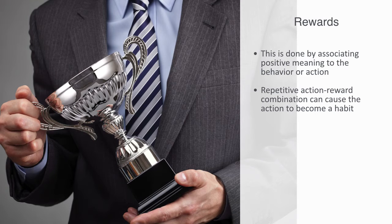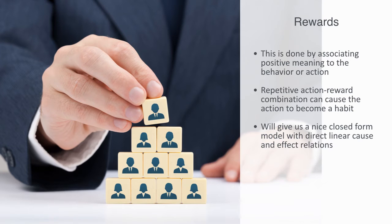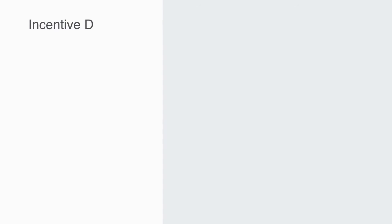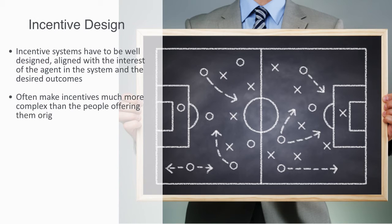This model has both its achievements and limitations. Incentive theory gives us a nice closed-form model with direct linear cause-and-effect relations, and is well suited to a top-down form of management, because extrinsic incentives are designed to give compliance — they are explicit and directly try to alter agents' behavior according to the instructions of some managing body. However, incentive systems have to be well designed and aligned with the interests of the agents and the desired outcomes. Human beings are both finite and creative, meaning those offering incentives are often unable to predict all the ways people will respond. Thus, imperfect knowledge and unintended consequences can make incentives far more complex than originally expected, leading either to unexpected windfalls or to disasters produced by unintentionally distorted incentives.